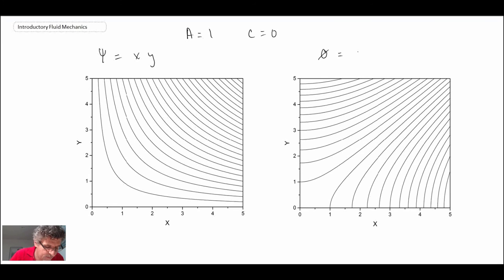And the potential function on the right, and that turned out to be x squared over two minus y squared over two.